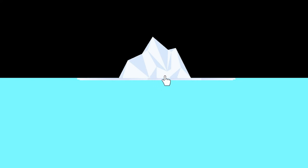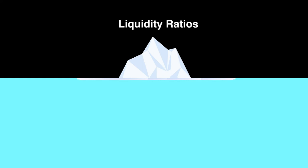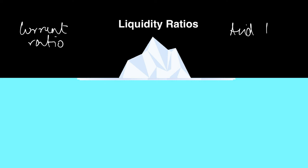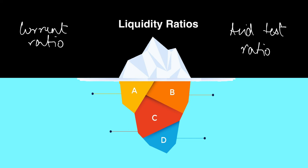Welcome to iceberg number two — not the same one that took down the Titanic, this is the innocent-looking one that was following right behind it. This iceberg represents our liquidity ratios. We discussed two of them: the current ratio and the acid test ratio, also called the quick ratio. Similar to the profitability ratios iceberg, this one also hides a few things under the water.